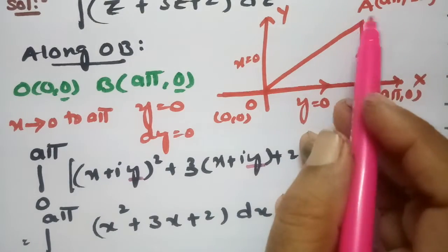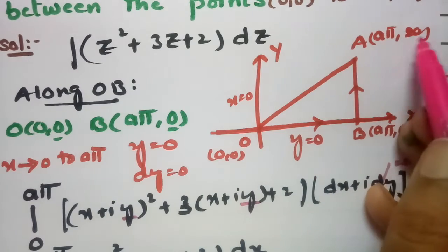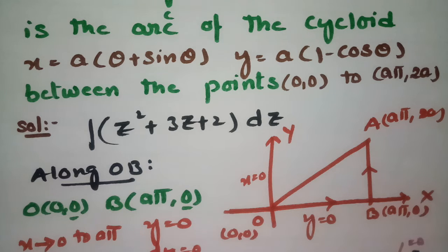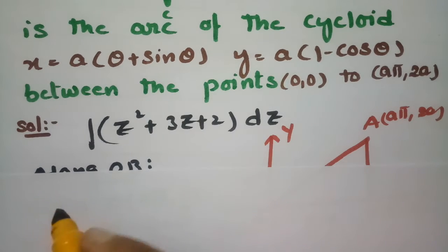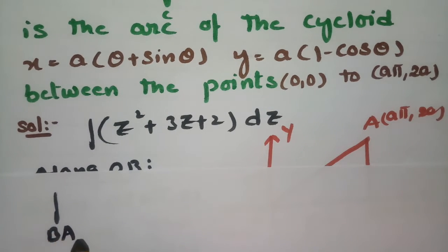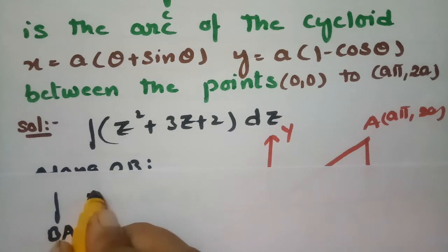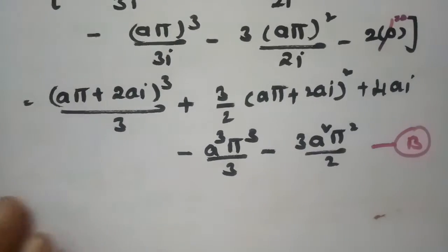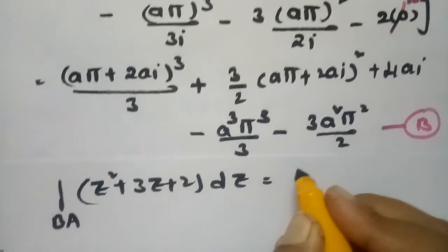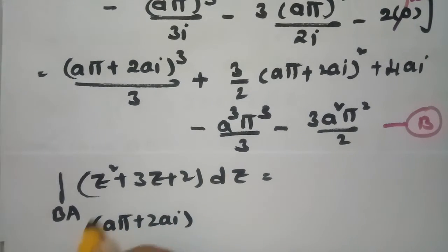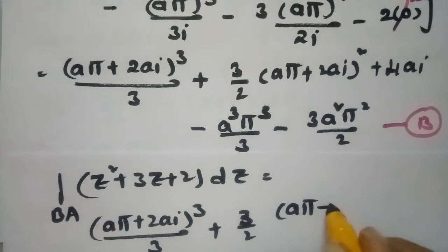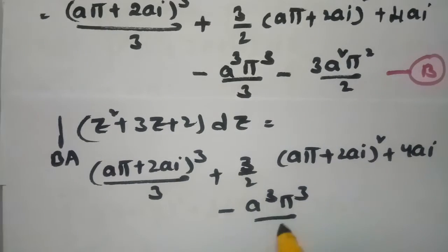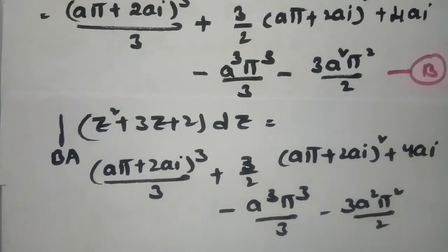So along OB the value is a³π³/3 + (3/2)a²π² + 2aπ, and along BA the value is (aπ + 2ai)³/3 + (3/2)(aπ + 2ai)² + 4ai − a³π³/3 − (3/2)a²π².